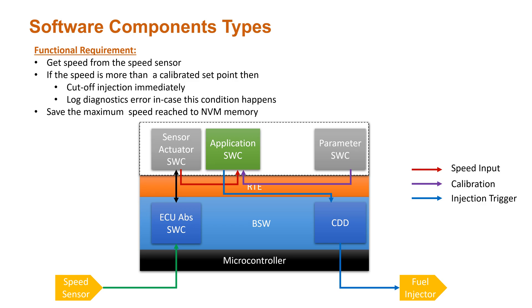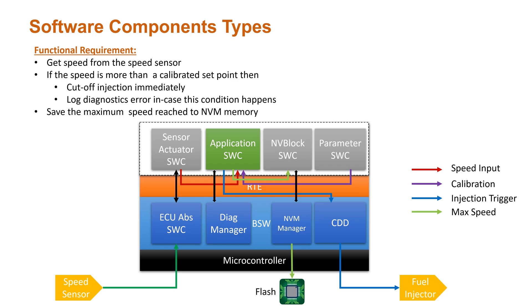The next requirement is to log this as an error entry for diagnostic purposes. For this, we need the help of the base software diagnostic manager. We introduce a BSW service component for diagnostics, which comes as part of BSW development. The application component will be connected to the service software component, and when an event happens, the application component passes on the information to the service component, which further handles the error entry. For saving the maximum speed, the application software component calculates it and we introduce an NV block software component that creates an NV block for the application, gets the data from the application software component, and passes it on to the NVM manager of the base software.